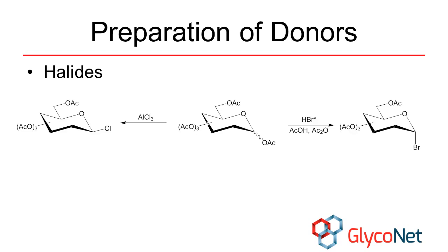Glycosyl halides were the first types of donor sugars to be developed. Bromides have traditionally been used the most, while chlorides are also frequently encountered. Both of these donors can be made from peracetylated sugars and the corresponding protic or Lewis acid.